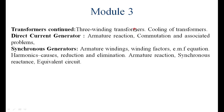This is the VTU syllabus continuation. We are looking into the DC generator armature reaction and commutation process, and a portion of the synchronous generator — studying different types of armature winding, winding factors, their effect on the EMF equation, how harmonics are minimized in the waveform, synchronous reactance, and the representation of the alternator.